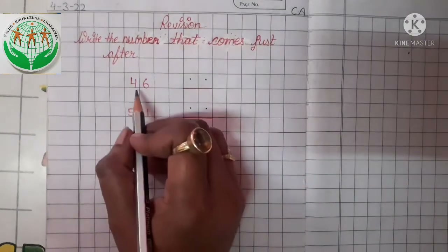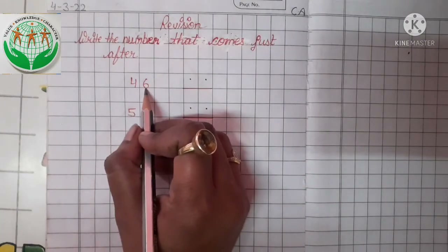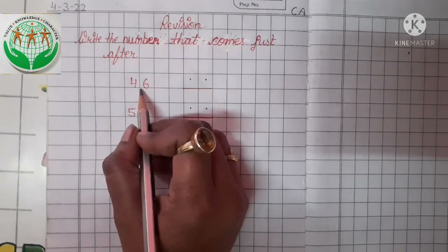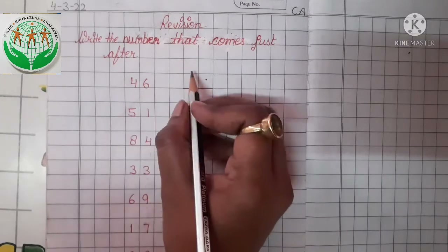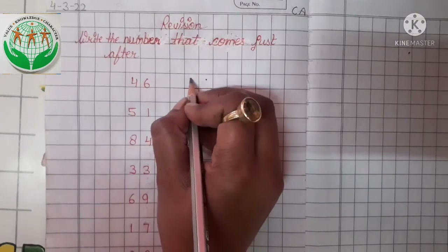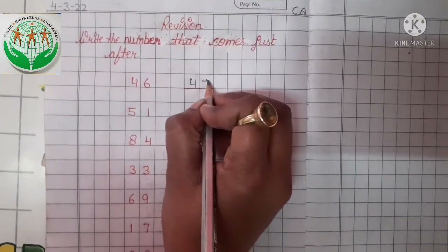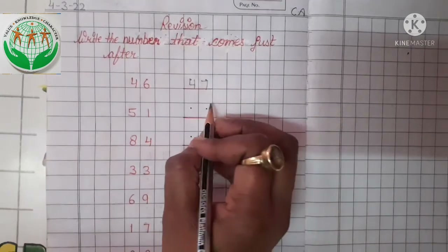So let's start, kids. This is number 46. Now tell me, what comes just after 46? 46 ke baad kya aega? Yes, number 47. So we write here 47.